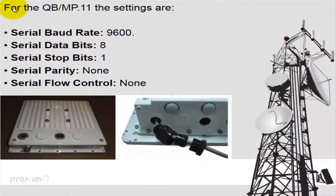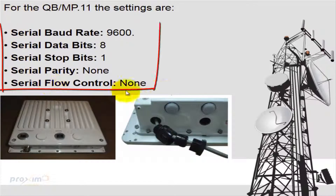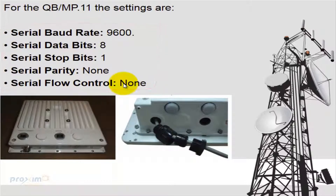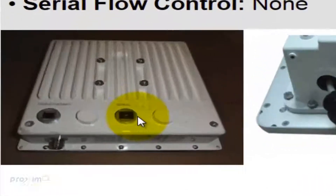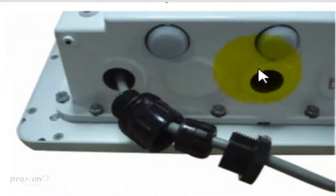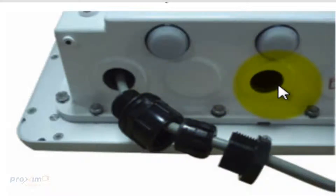Looking at the QB/MP11 family, the serial connection settings are identical to the AP4700 radios: baud rate is 9600, data bits is 8, stop bits is 1, parity is none, and flow control is none. One thing to note is that depending on which radio you have, the serial connection is at a different location. On original radios, you can see the serial connector in the back next to the ethernet port. On newer radios, the serial port is located on a different side. Other than that, they operate the exact same way.